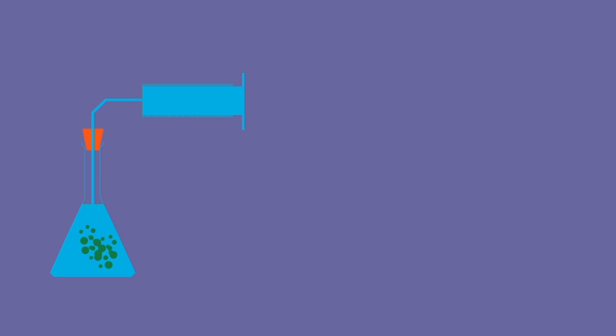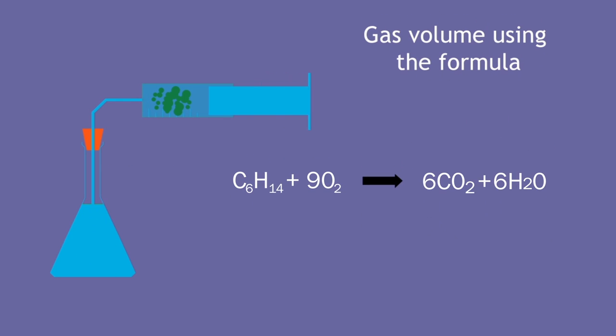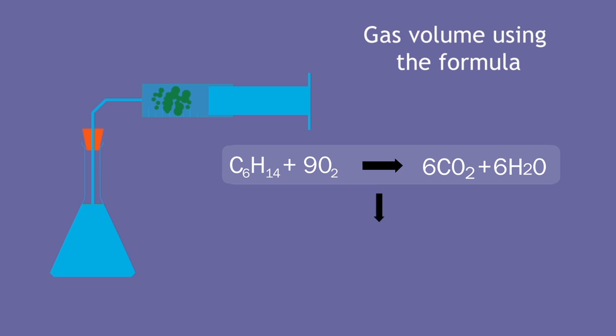Knowing this, you can calculate the gas volume using the formula to work out the volume of carbon dioxide produced. Pause, use the formula, and then continue to do this.